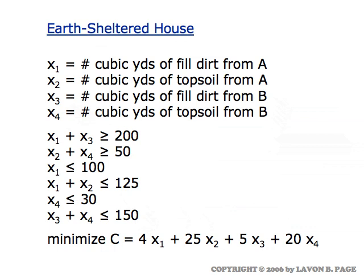We're minimizing the cost. The cost is as shown here borrowing the coefficients come from the cost matrix that we saw, four dollars per cubic yard for fill dirt from supplier A and so forth. So here we have it all put together. We have the four variables, one, two, three, four, five, six constraints, and the cost function which is being minimized.